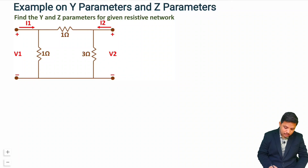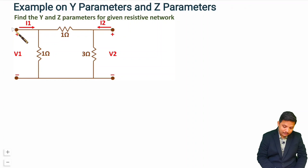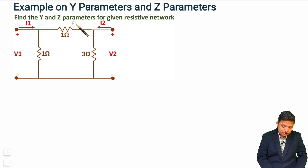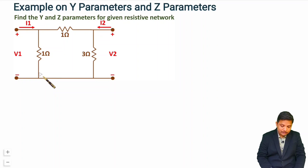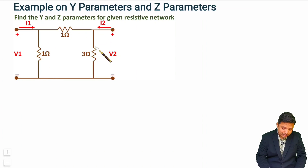Here we have one very simple electrical network, and for this resistive network we want to find Y and Z parameters. Whenever you have a question based on Y and Z parameters, first you need to see whether the given network is in terms of a simple T network or pi network. Here you can observe this is a simple pi network.